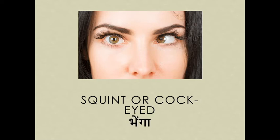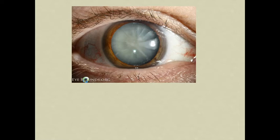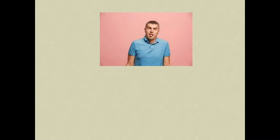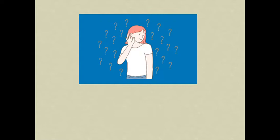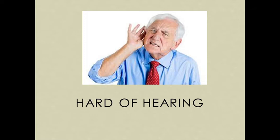Squint or coke-eyed means banga. One-eyed means kana. One eye disease is cataract. Gunga means dumb — we don't want to say dumb because B is silent here. Teachers say 'Are you dumb?' Behera or beheri means deaf. Hard of hearing means poochah-sunneh-mala.